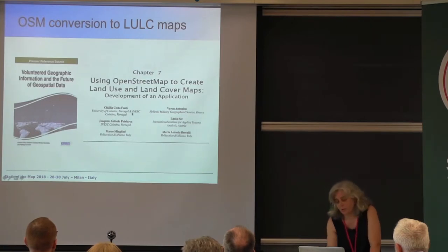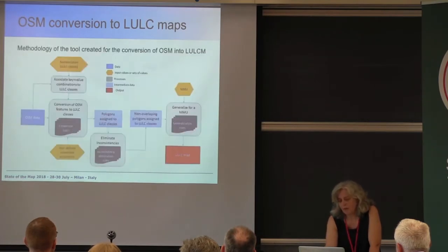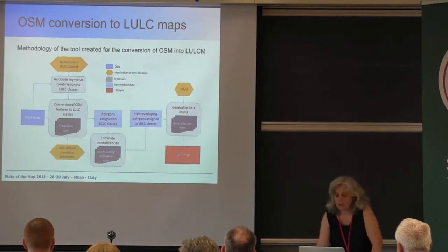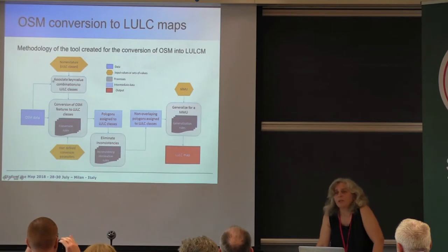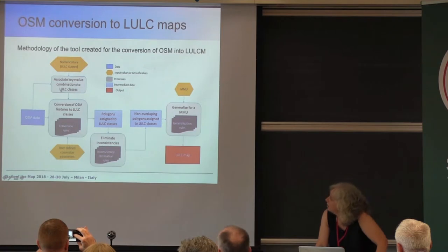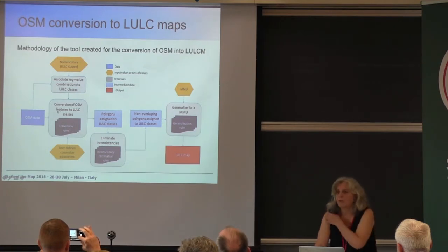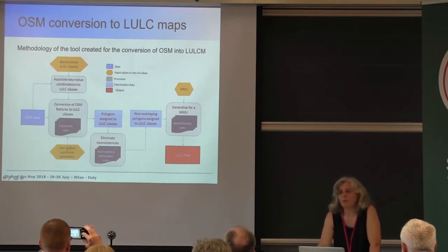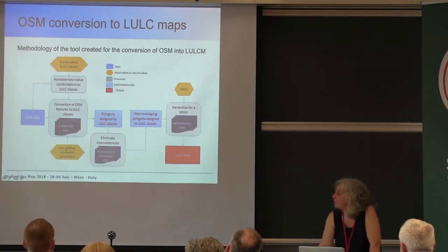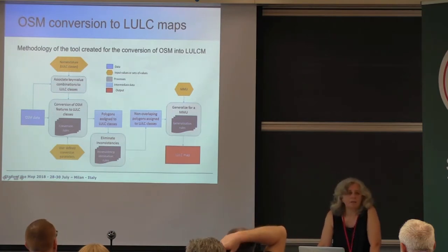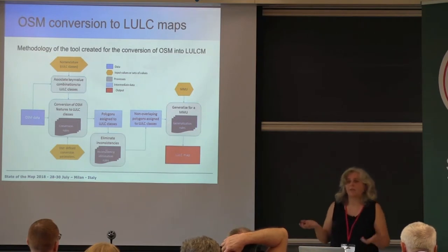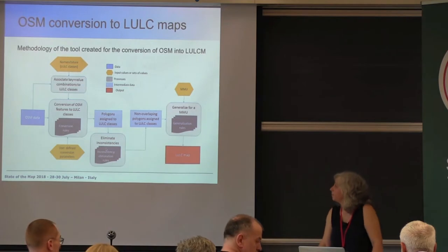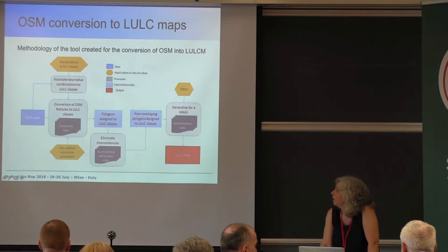There are several people involved in this process. Basically, we need to choose the classes — which we call the nomenclature — then get OSM data. This part needs to be done manually: we identify from OSM data what we can assign to each class. Then there is a conversion process with several tools inside it, requiring some parameters — some created by users, others with default values. The output is polygons assigned to classes. Then there are inconsistencies due to overlapping polygons with different classes, which we have to eliminate, since in a land cover map you have only one class per location. After eliminating inconsistencies, we get non-overlapping polygons.